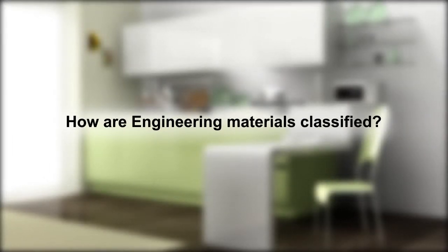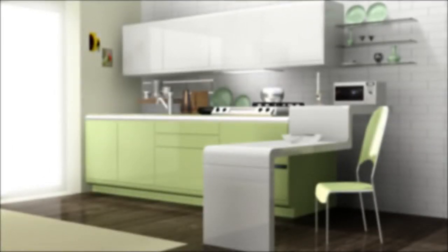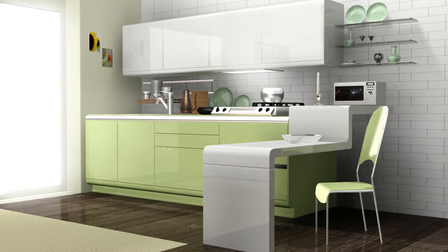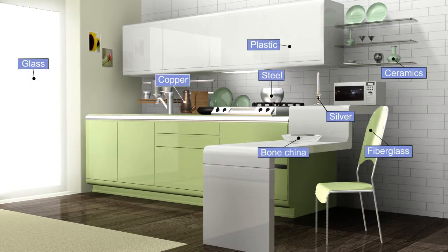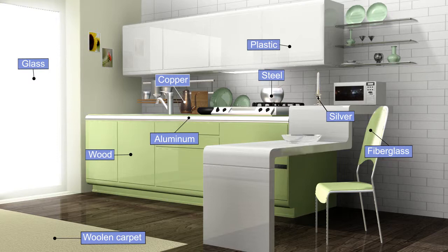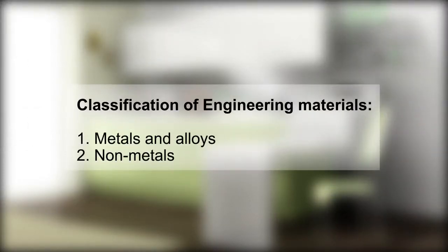How are Engineering Materials Classified? Materials comprise a wide range of metals and non-metals. For example, in our kitchen we use a wide range of materials which are metals or non-metals. Engineering materials can be broadly classified on the basis of origin and composition as metals and alloys, and non-metals.